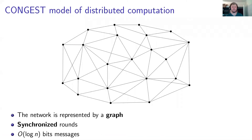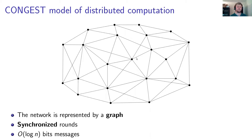The results we'll be presenting today are in the congested model of distributed computation. Here, we're given a network which is presented as a graph. Each vertex of the network has a server, and the goal is to compute some global function in the distributed fashion. The computation will be done in synchronized rounds, and on each round, every pair of neighboring servers are allowed to exchange a logarithmic size message.